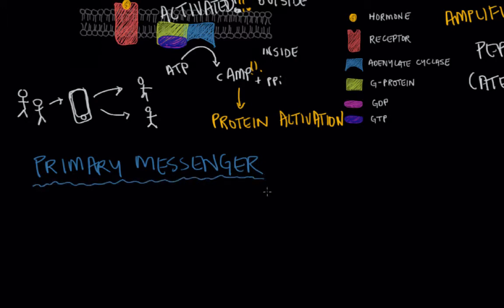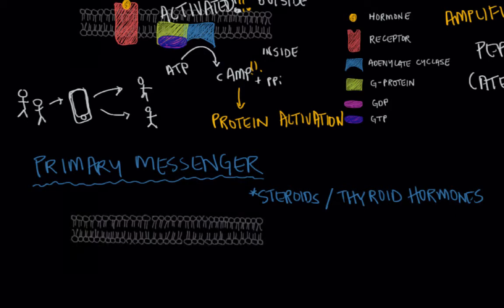Certain hormones like steroids and thyroid hormones can actually cross the cell membrane, and it eliminates this entire middleman system that we set up before. So let me pull in another cell membrane. The hormone crosses the cell membrane.